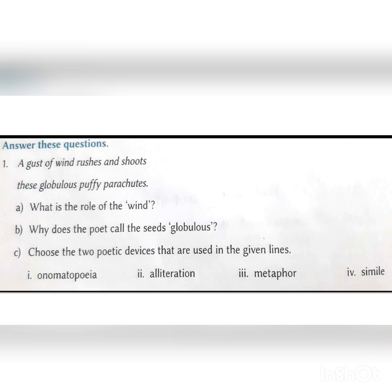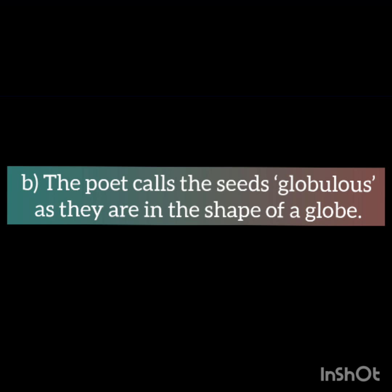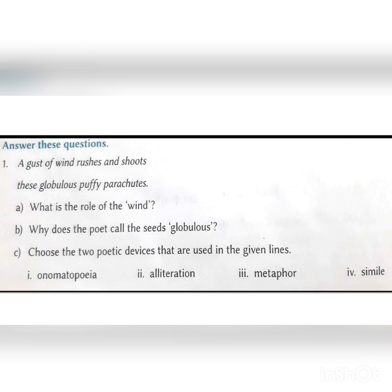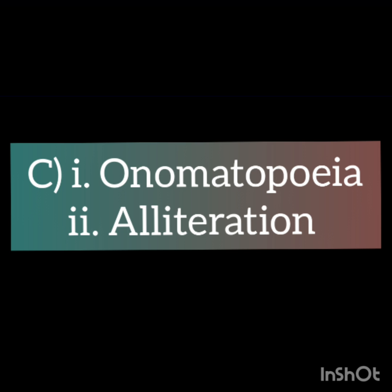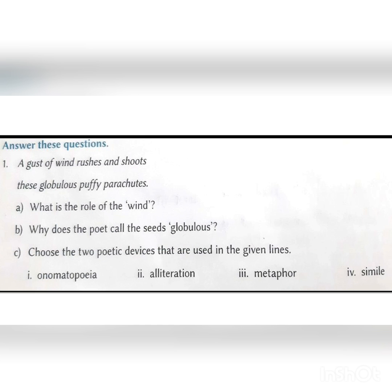Part B: Why does the poet call the seeds globulous? The poet calls the seeds globulous as they are in the shape of a globe. Part C: Choose the two poetic devices that are used in the given lines. The two poetic devices used are onomatopoeia and alliteration.